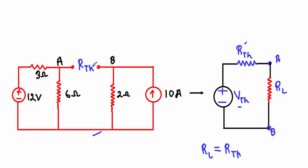Now, if I connect the load resistor RL back across terminals A and B, the Maximum Power Transfer Theorem states that RL should have a value exactly equal to RTH to receive maximum power from the network. This is what the Maximum Power Transfer Theorem implies.